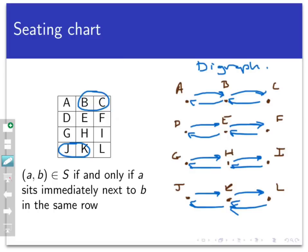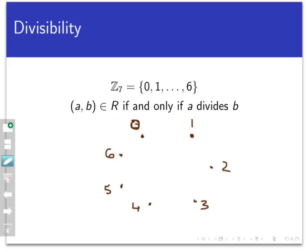As a second example, let's look at the set Z7, which consists of the numbers 0, 1, 2, 3, 4, 5, and 6. And let's define a relation R on Z7 by setting (a, b) to be in this relation if a divides b. So let's draw the directed graph for this relation.